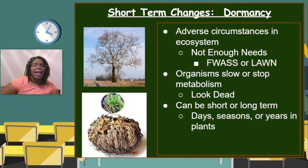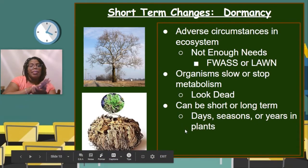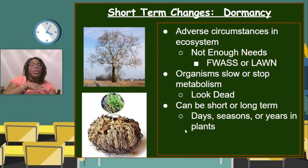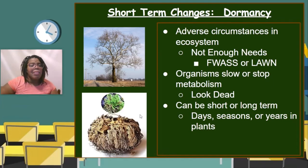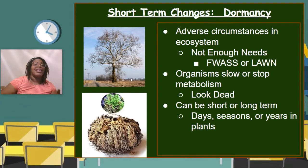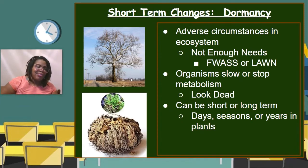Sometimes dormancy can be longer term. In the video we saw the resurrection plant, and it told us that sometimes it can stay in its dormant phase for years. If you brought the plant home today and put it in water, it would open back up and end its dormancy. But if it stayed in a bag for five, six, or seven years and then you pulled it out, it could still come out of dormancy. Because it can also end in just a day, we'll classify it under short-term for this week.